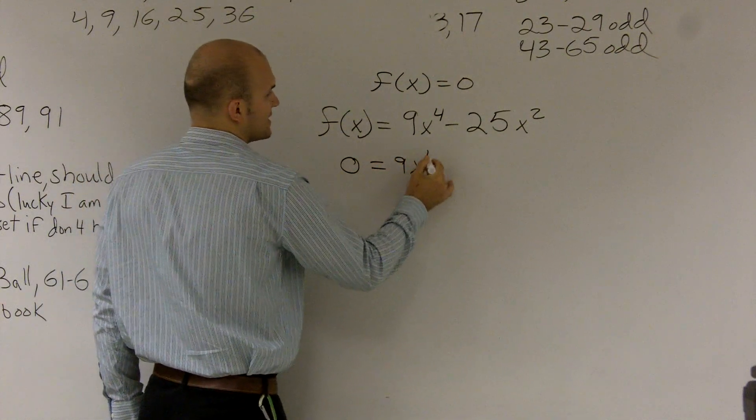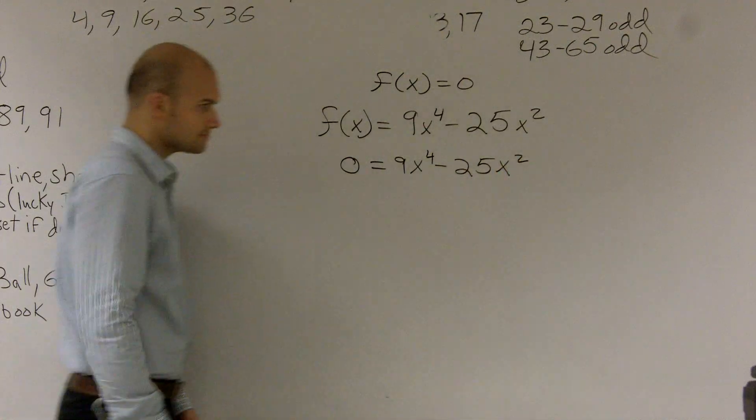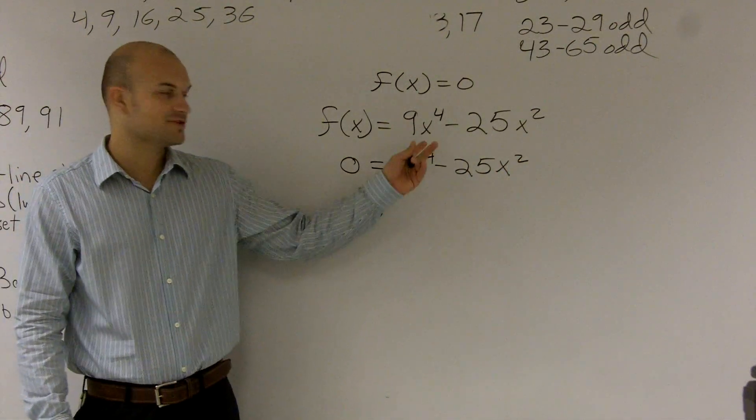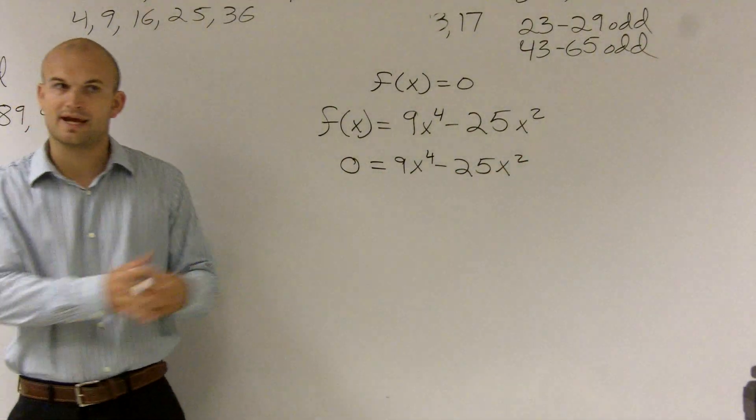Zero equals 9x to the fourth minus 25x squared. Now we have a little bit of a problem here because we have an x to the fourth and we have an x squared. So we simply just can't isolate our variable and solve for x.